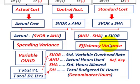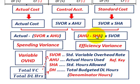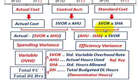For our efficiency variance, we compare the control account to our standard cost. It's the difference between actual hours used and standard hours allowed, times the standard variable overhead rate. You've factored out the standard variable overhead rate from standard cost — the difference between actual hours used and standard hours allowed times the standard variable overhead rate is your efficiency variance.